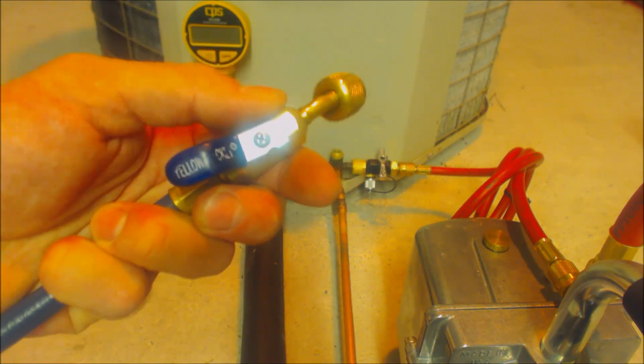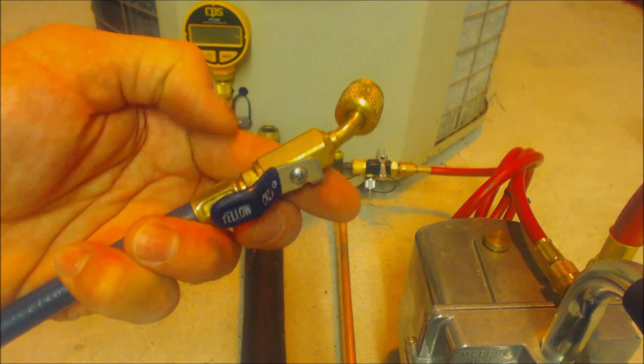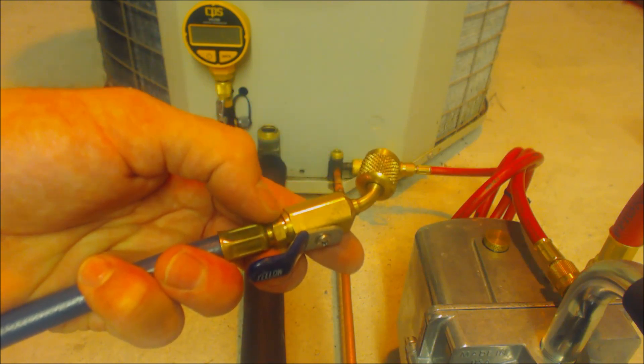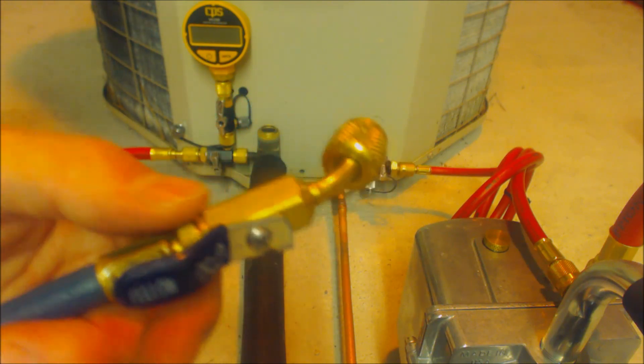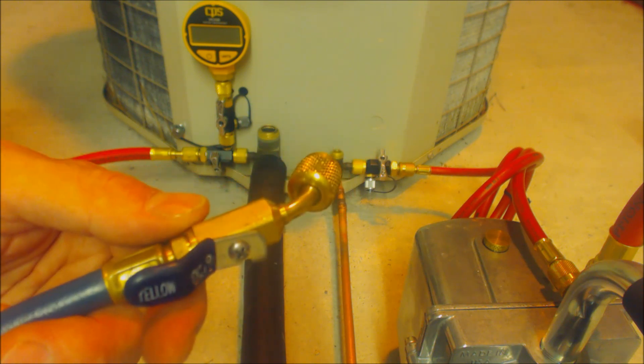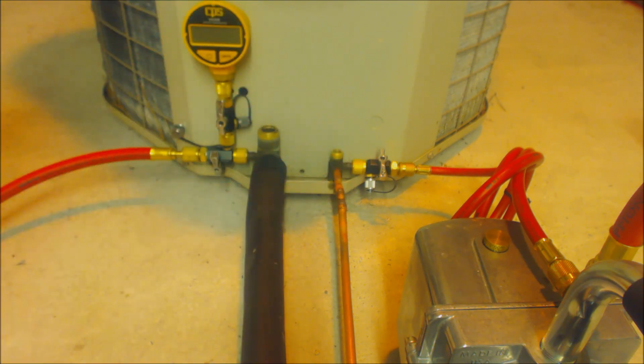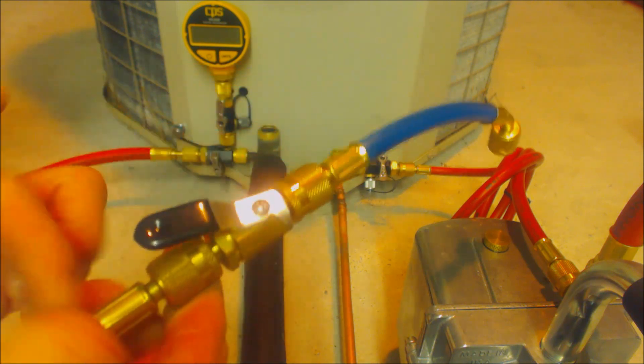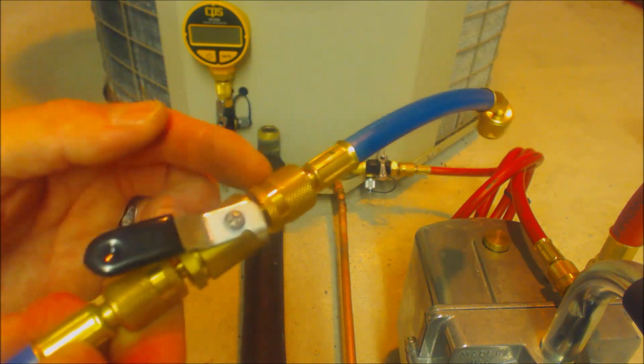Another thing could be that this valve right here is potentially leaking or this connection could be leaking. A lot of times this stuff will hold during the pressure test, but then when you're vacuum pumping, that's when you end up having a problem. It could be that you have just too many connections and maybe something in here is leaking.